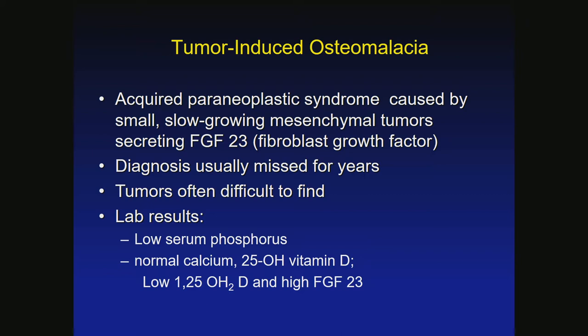The very high FGF23 blocks the kidney's ability to reabsorb phosphate. Her serum phosphate is low, her urine phosphate is really high because she's excreting it. FGF23 also blocks the ability to hydroxylate 25-D to 1,25-dihydroxyvitamin D, which is why the 1,25-hydroxyvitamin D is low. You can also assess by finding the high FGF23 directly. You will start to hear more about these types of osteomalacia because a medication now blocks FGF23.